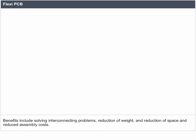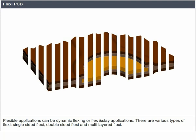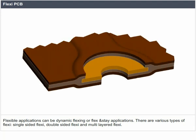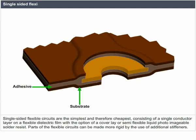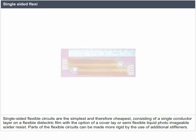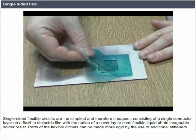Flexi PCB benefits include solving interconnecting problems, reduction of weight and space, and reduced assembly costs. Flexible applications can be dynamic flexing or flex-and-stay applications. Types of flexi include single-sided flexi, double-sided flexi, and multi-layered flexi. Single-sided flexible circuits are the simplest and cheapest, consisting of a single conductor layer on a flexible dielectric film with the option of a cover layer. Parts of the flexible circuits can be made more rigid by use of additional stiffeners.